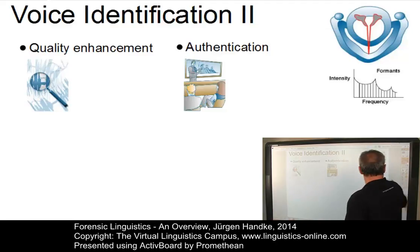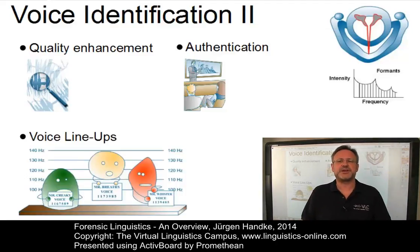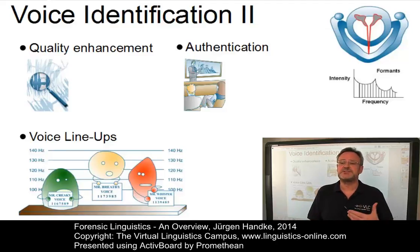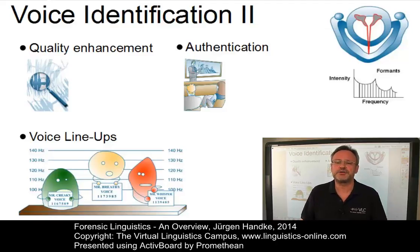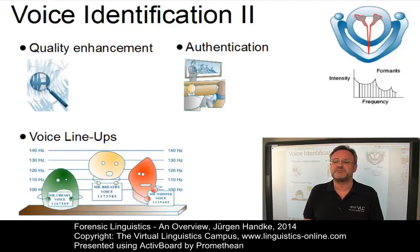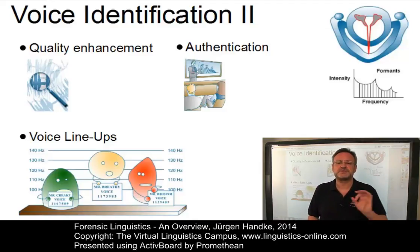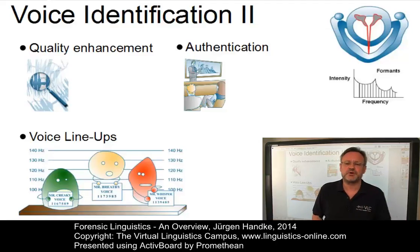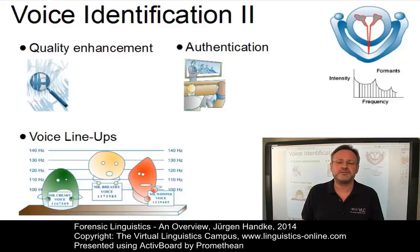There are also the so-called voice lineups, where the identification of a voice is often carried out by lining up several speakers. The language of the incident is recorded by one or more witnesses, and a number of recordings of the incident language are then made by the suspects and other persons of the same gender, similar age, similar class, similar educational and dialect background, and crucially with a similar type of voice to the suspect — for example, a creaky voice or a breathy voice. These recordings are played to the witnesses to state whether they can identify any of the voices as that of the perpetrator.